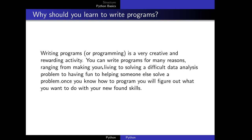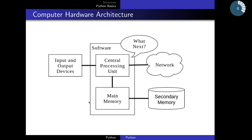Before going into programming, we need to have a basic idea about the structure of a computer. If you look at your phone or computer closely, it will contain these main parts. The main part is the central processing unit, or the CPU. It is the part that keeps asking 'what next?' It's very fast — if your CPU is rated at 3 GHz, it will ask that 'what next?' question 3 billion times per second.